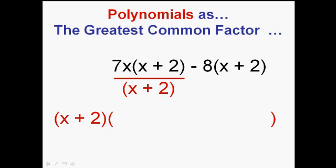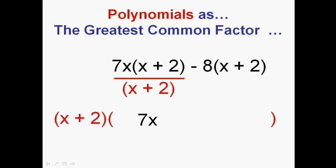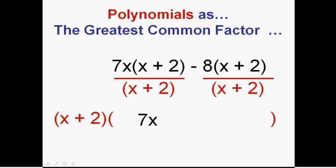And I decide what goes inside parentheses via division or canceling in this case. Dividing the first term by x plus 2, what I'm left with is 7x. And here's the twist. Dividing the second term by x plus 2, now that's a subtraction sign, but it can be treated as a negative sign. So when you cancel the x plus 2's you could say that you're left with a negative 8 or a minus 8. And that's your answer.